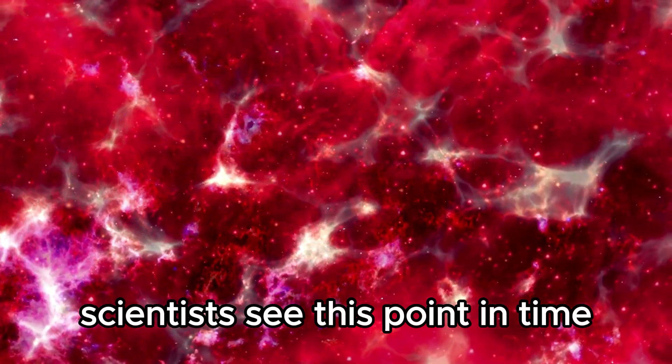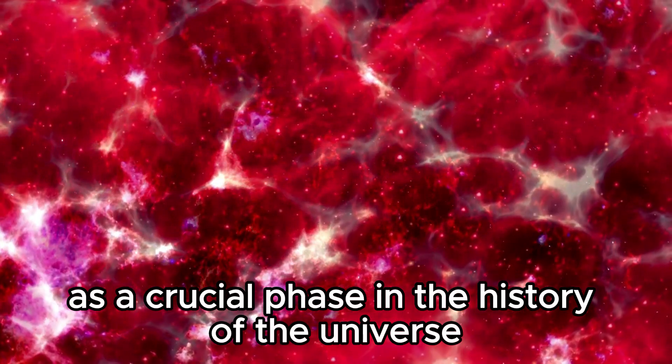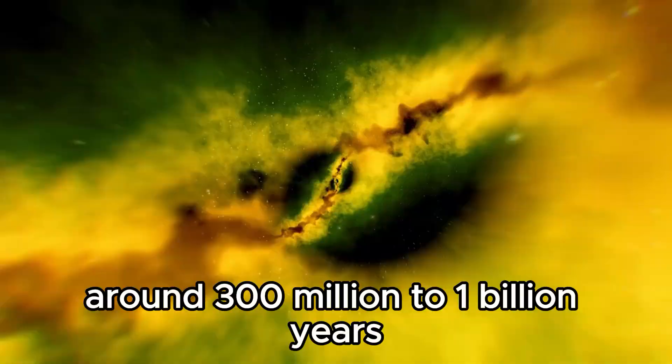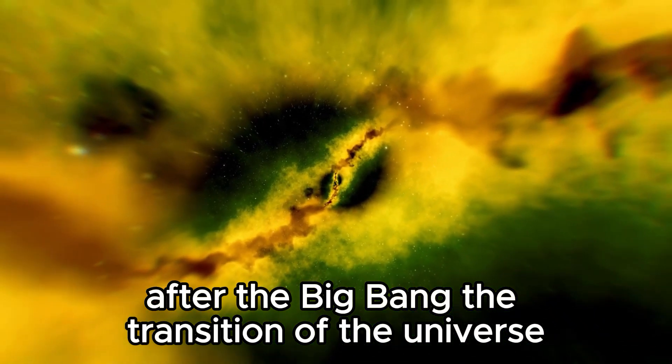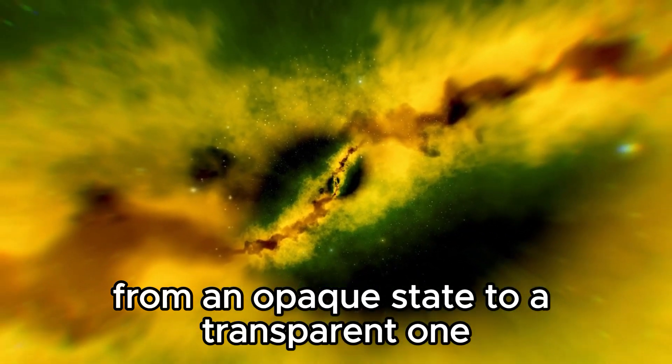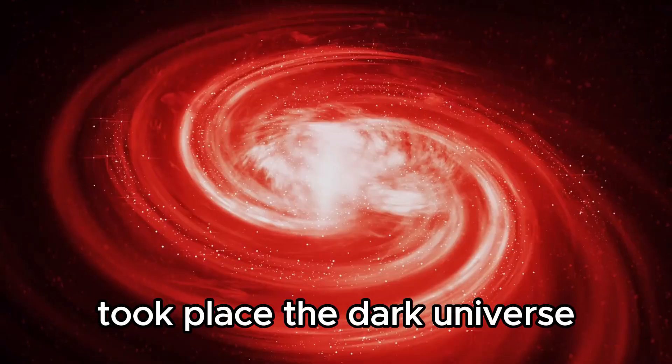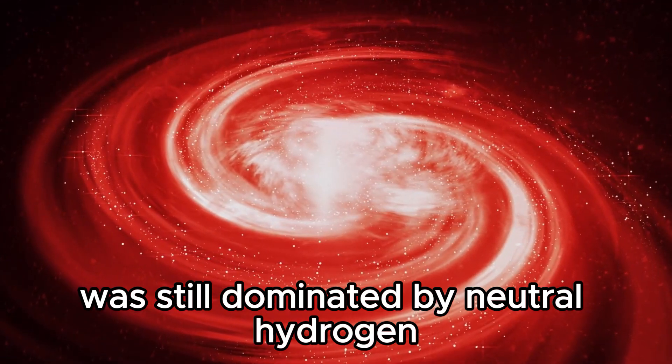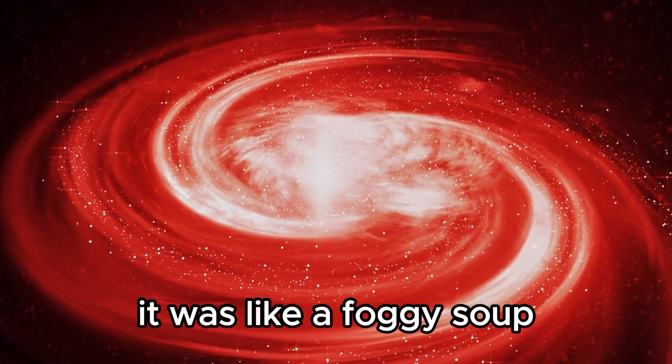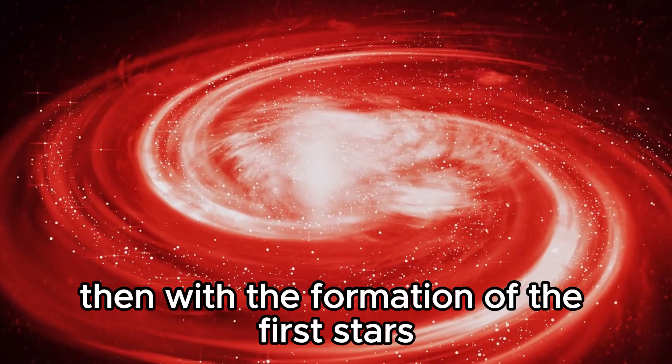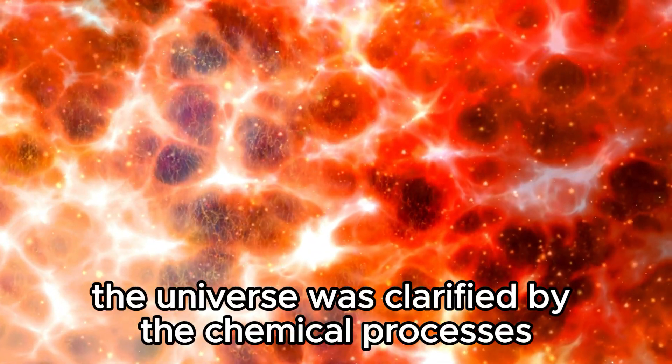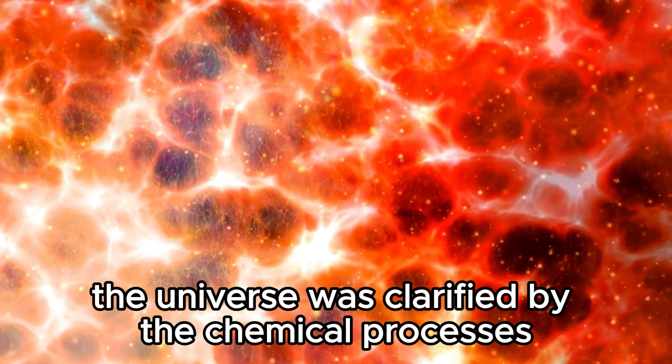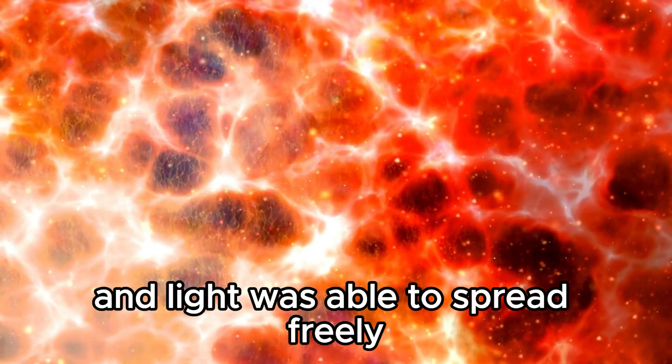Scientists see this point in time as a crucial phase in the history of the universe. Around 300 million to 1 billion years after the Big Bang, the transition of the universe from an opaque state to a transparent one took place. The dark universe was still dominated by neutral hydrogen. It was like a foggy soup. Then, with the formation of the first stars, reionization set in and it became light. The universe was clarified by the chemical processes, and light was able to spread freely.